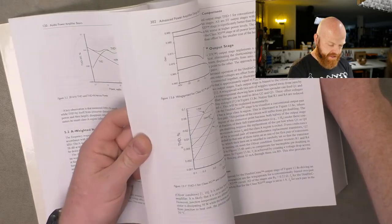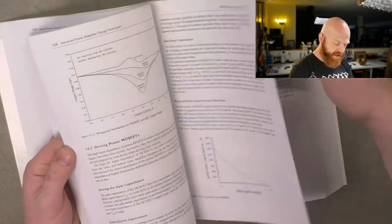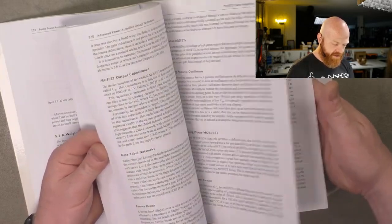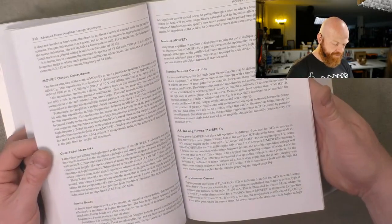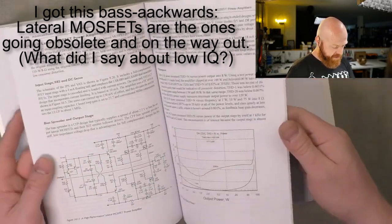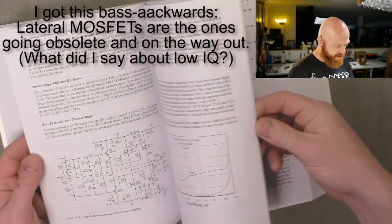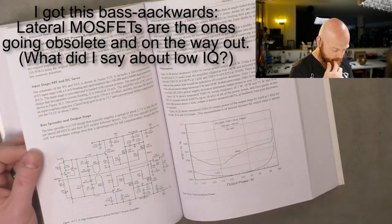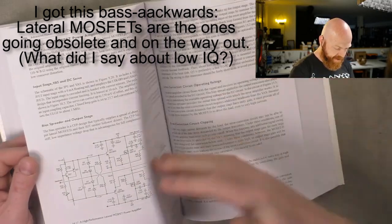So, he goes into different output stage designs. MOSFET output stages, which can be a bit of a mystery sometimes. You know, the lateral versus vertical MOSFETs, that kind of thing. Vertical MOSFETs are kind of on the way out. So, he shows you how to use lateral ones properly. There's no reason you can't. You just need to set the amp up for it.